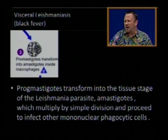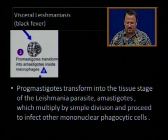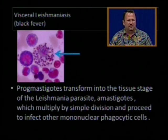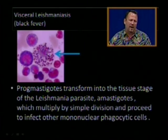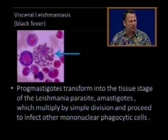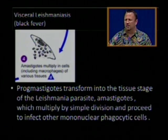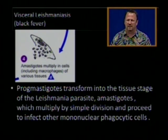These amastigotes multiply by simple division and proceed to infect other mononuclear phagocytic cells. Here is a bone marrow biopsy showing a mononuclear macrophage full of amastigotes. They multiply and are released from the macrophages to be taken up by other macrophages — this is how they spread inside the human.